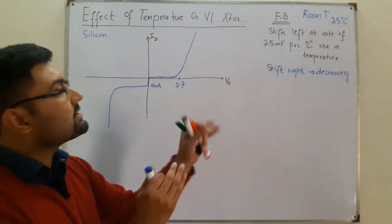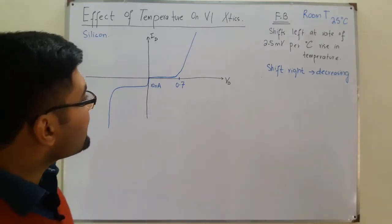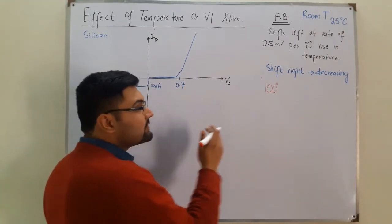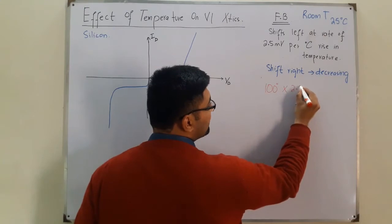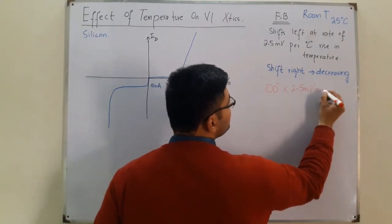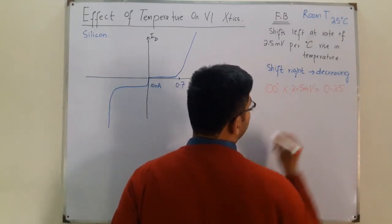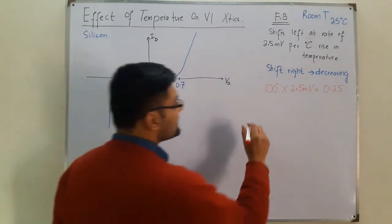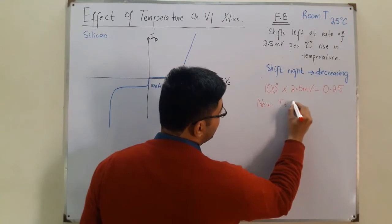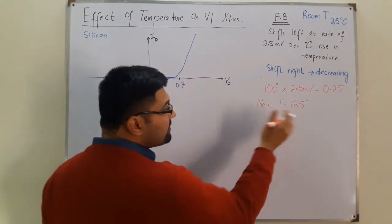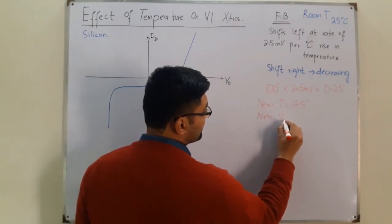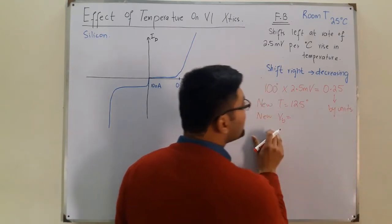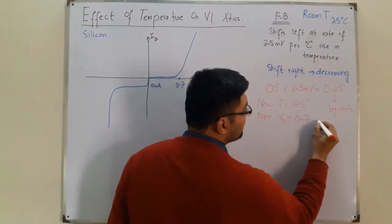Now for each degree rise we are shifting it to the left. Let's say I raise the temperature by 100 degrees. The shift is 2.5 millivolts multiplied by 100, which equals 0.25 volts. This means I have increased the temperature by 100 degrees centigrade, so the new temperature is 125 degrees Celsius.